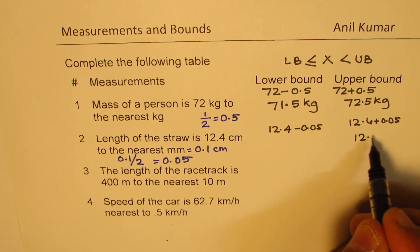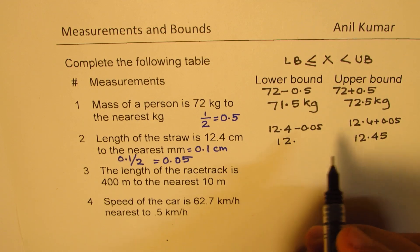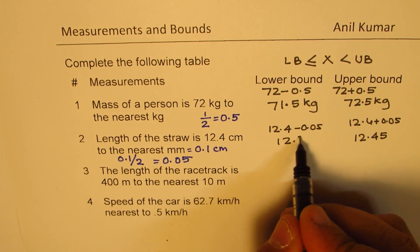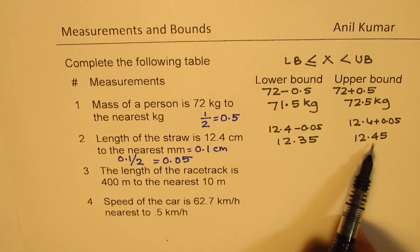Right, so when you add, we get 12.45, and when you subtract, we get 12.35. So that becomes the lower bound, and this is the upper bound, clear?